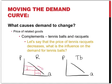But what happens to the demand for tennis balls? If there are more people out there playing with tennis rackets, there will also be an increase in the demand for tennis balls. This means that the whole demand curve moves to the right — more tennis balls are demanded at every price.